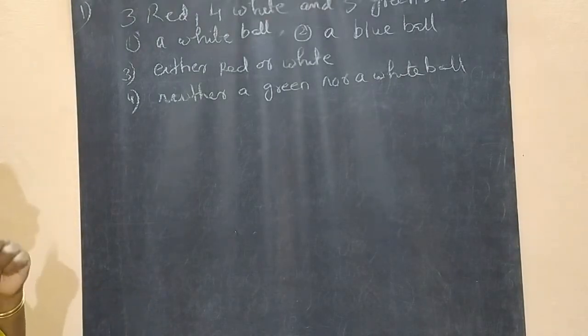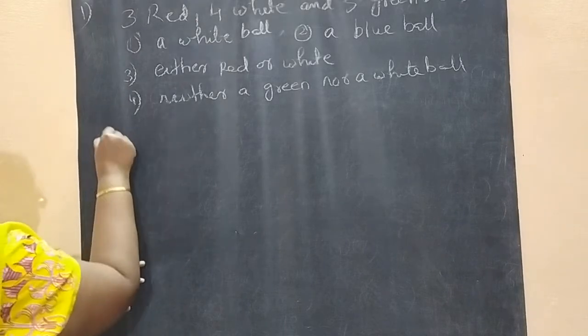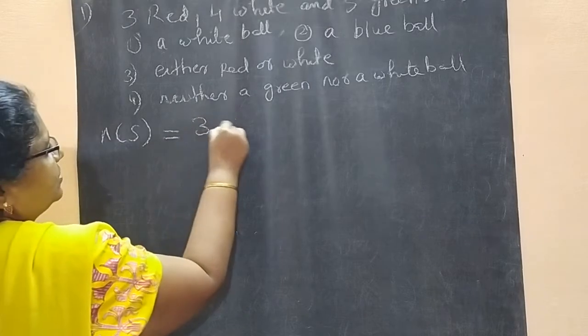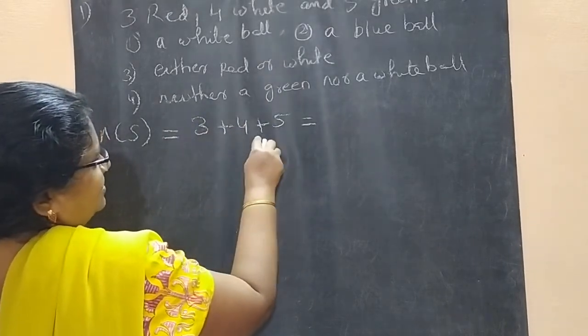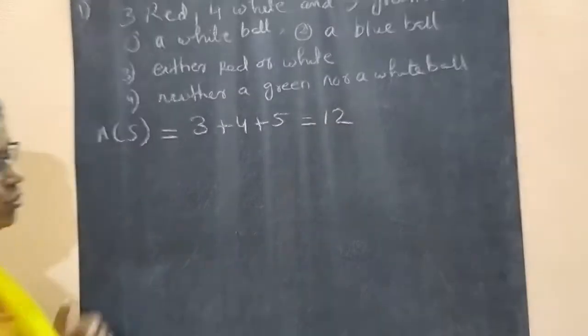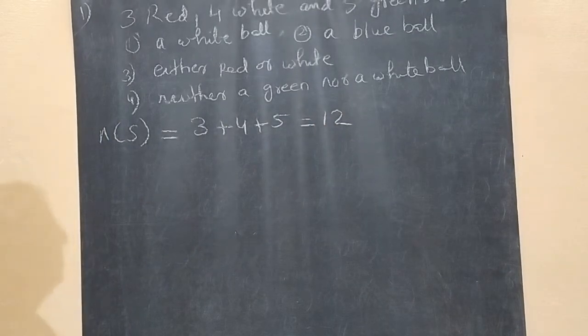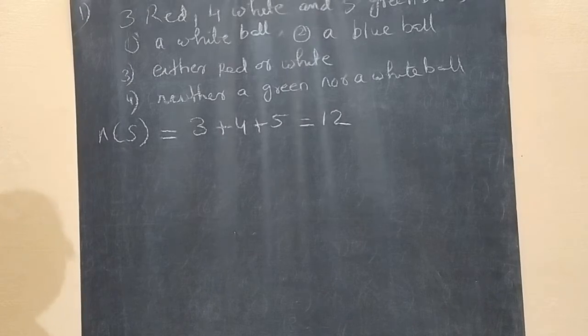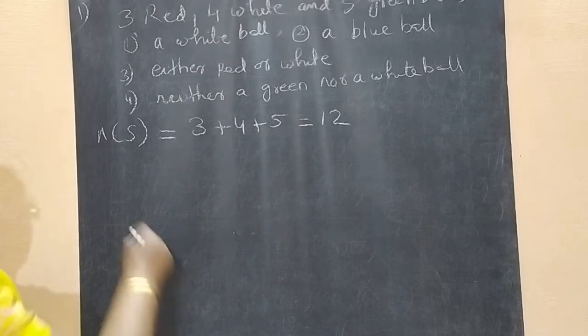So, as that bag contains total how many balls? 3 red, 4 white and 5 green. Here no need of writing the sample space, directly you can write n of S. n of S is 3 plus 4 plus 5, 7 plus 5, total 12 balls. Now, we are taking a ball and what is the probability of getting a white ball? That is the question.